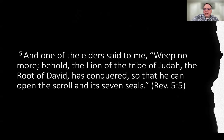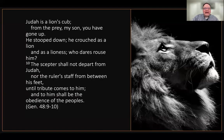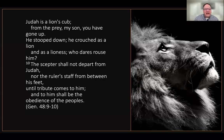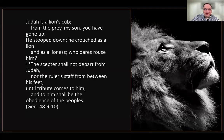We have two key descriptors of the worthy one: he is the lion of the tribe of Judah and he is the root of David. These are clearly messianic terms. The lion of the tribe of Judah comes from Genesis 49, verses 9 and 10: 'The scepter shall not depart from Judah, nor the ruler's staff from between his feet until tribute comes to him, and to him shall be the obedience of the peoples.' This has always been understood as referring to the Messiah — all throughout the Old Testament period, Jewish people have been looking for the lion of the tribe of Judah.